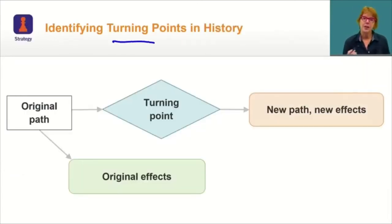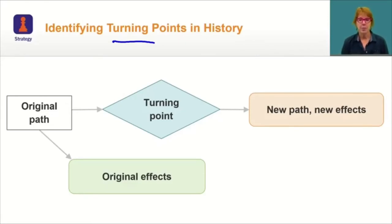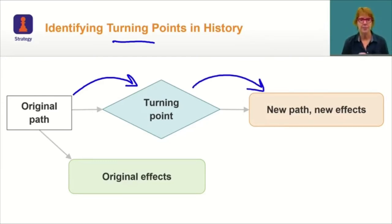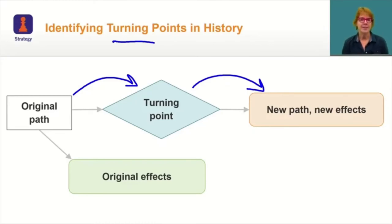A turning point is an event marking a unique or important historical change of course. It can be an event or a deliberate decision made by someone in power — you have your original path, a turning point, and now a new path with new effects. For example, take the fall of Constantinople. Originally it was a Christian city, the center of the Orthodox Church, and heavily influenced by Greek culture. After its fall, Turkish Muslims came in, and it is now more heavily influenced by Arab culture, with its name changed to Istanbul. The Hagia Sophia, once a Christian church, was converted to a mosque during that particular turning point in history.